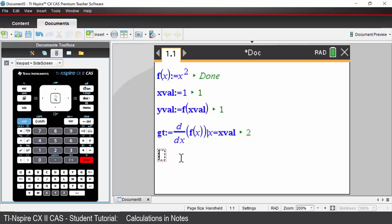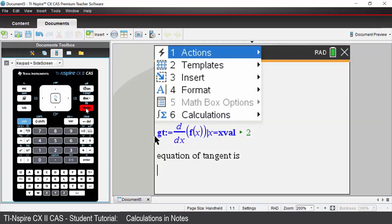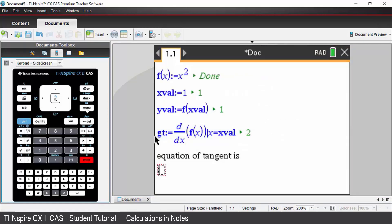We now need to actually calculate the equation of the tangent. To do that let's just enter some text first of all. Type in equation of tangent is. We'll press enter. We'll insert another math box now. So menu, come down to insert, math box.